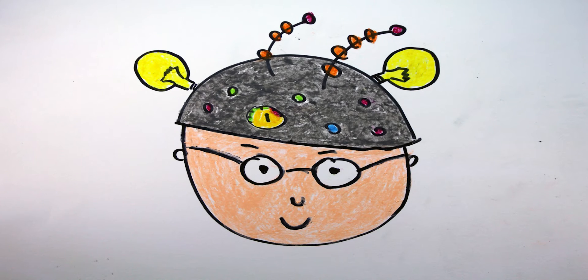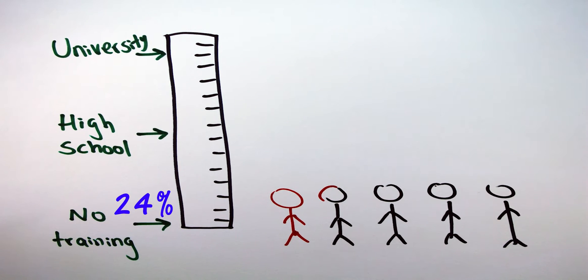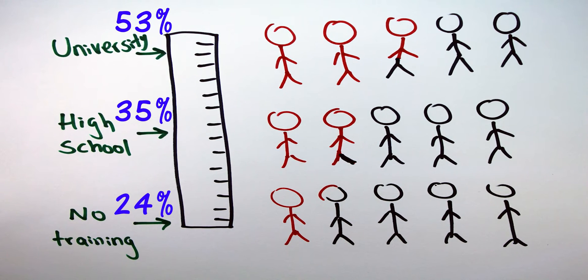For example, in 2014, researchers in Germany found that nearsightedness becomes more common as education level increased. The researchers found that 24% with no high school education or other training were nearsighted, while 35% of school graduates were nearsighted and 53% of university graduates were nearsighted.